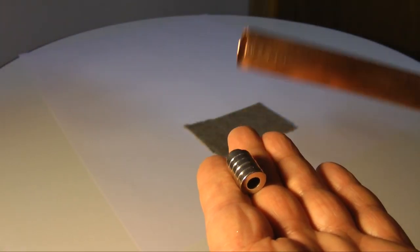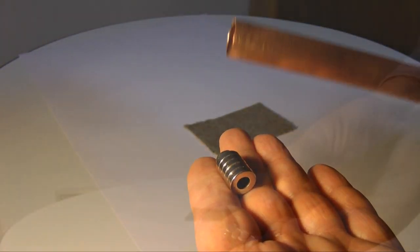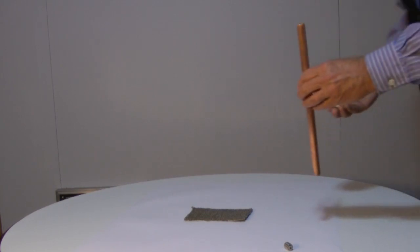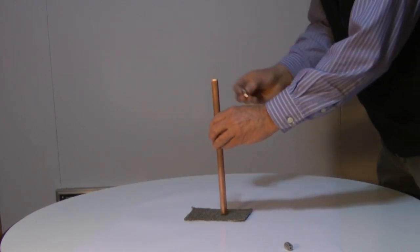Remember that the magnet is not attracted to the copper pipe, so if I hold the pipe vertically and drop the magnet into the pipe, it will fall out the bottom.